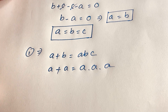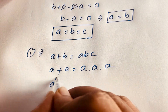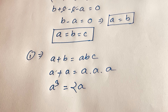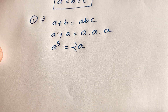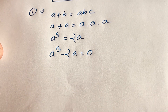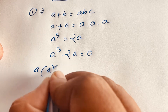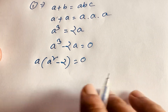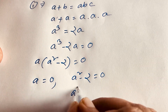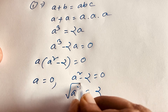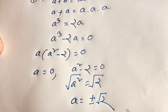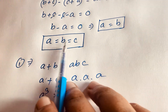So this becomes a to the power 3, and a plus a is 2a. The equation becomes a³ minus 2a is equal to 0. Factoring out a, we get a times (a² minus 2) is equal to 0. So either a is equal to 0, or a² is equal to 2. Taking the square root of both sides, we find a is equal to plus or minus square root of 2.